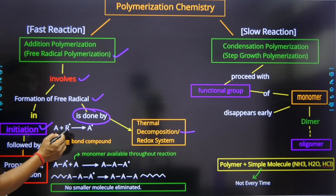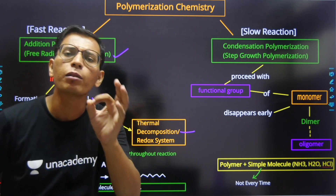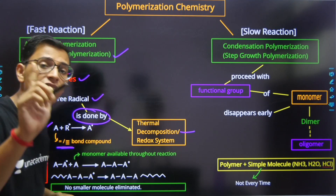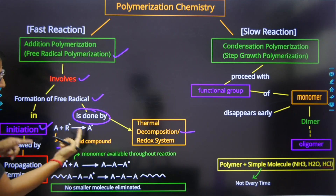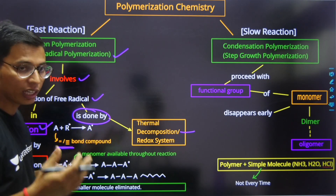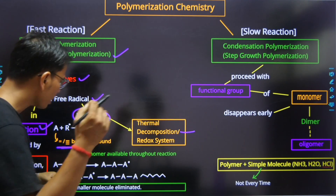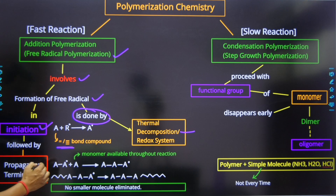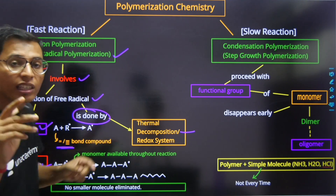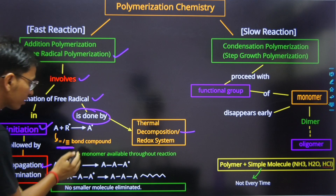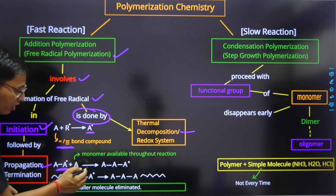That free radical follows the reaction mechanism, and the monomer must have a double or triple bonded compound — that is the necessary condition for free radical polymerization, or addition polymerization. When the reaction starts, the double bond is cracked and broken, and free radicals pair with hydrogen. This leads to the propagation step, where the free radical-containing excited monomer gets attached to another monomer to form a chain, and the chain starts to propagate.